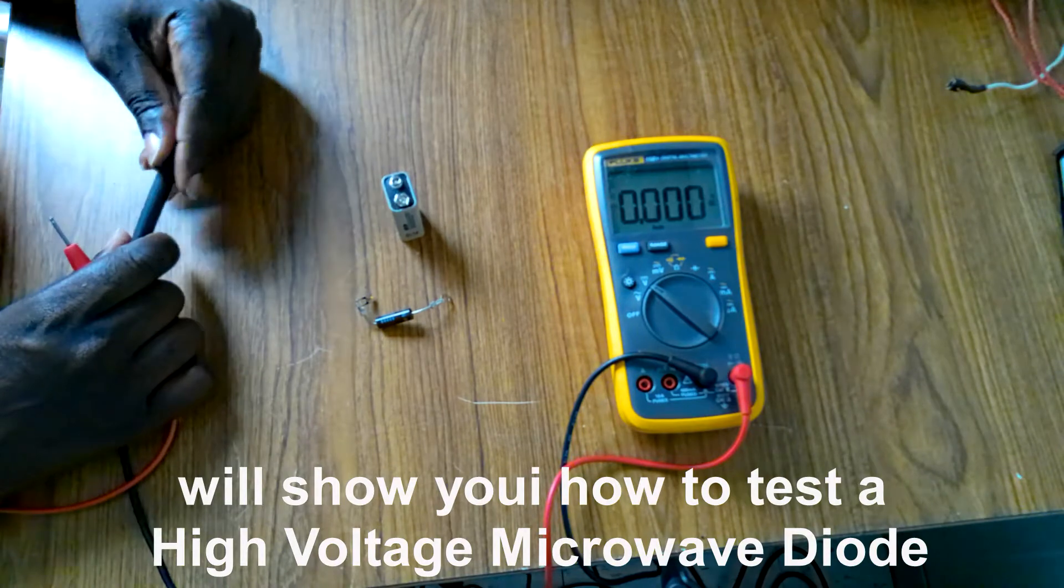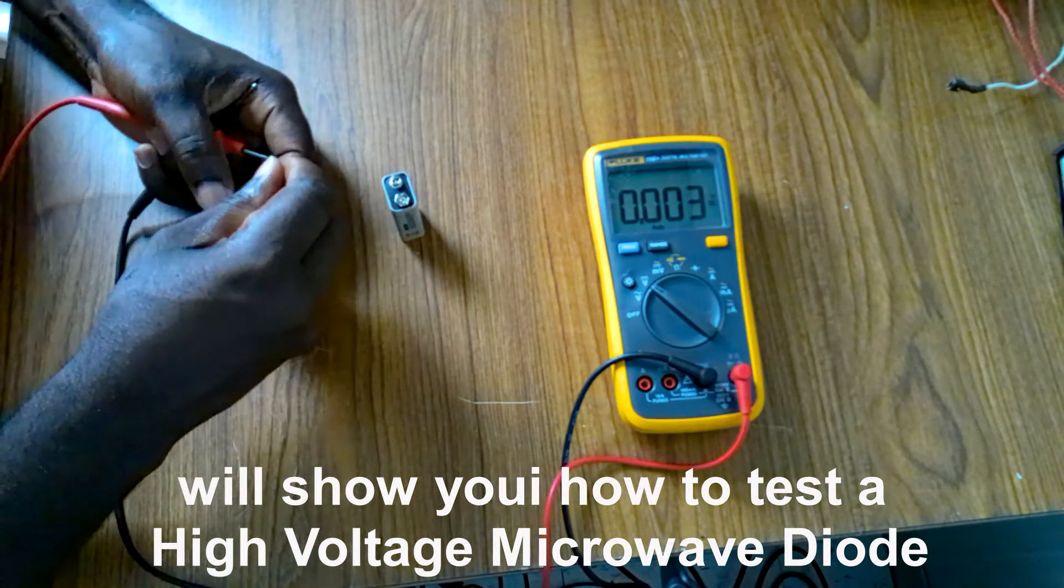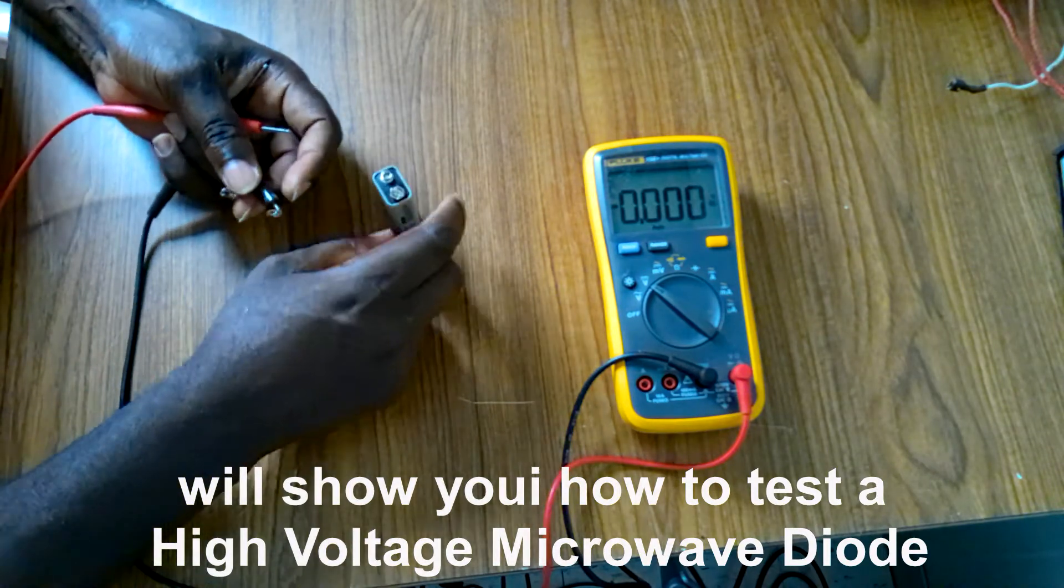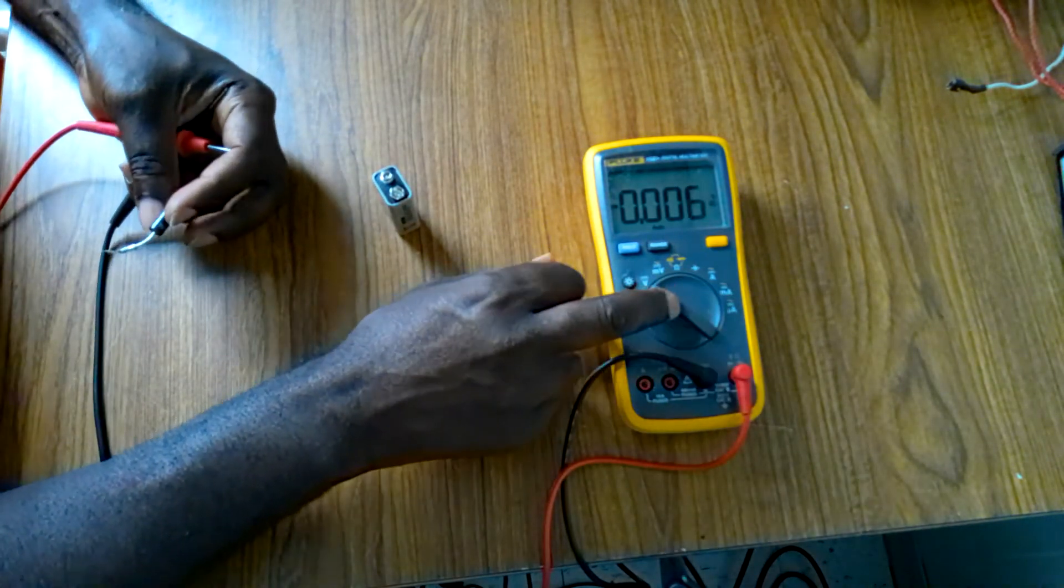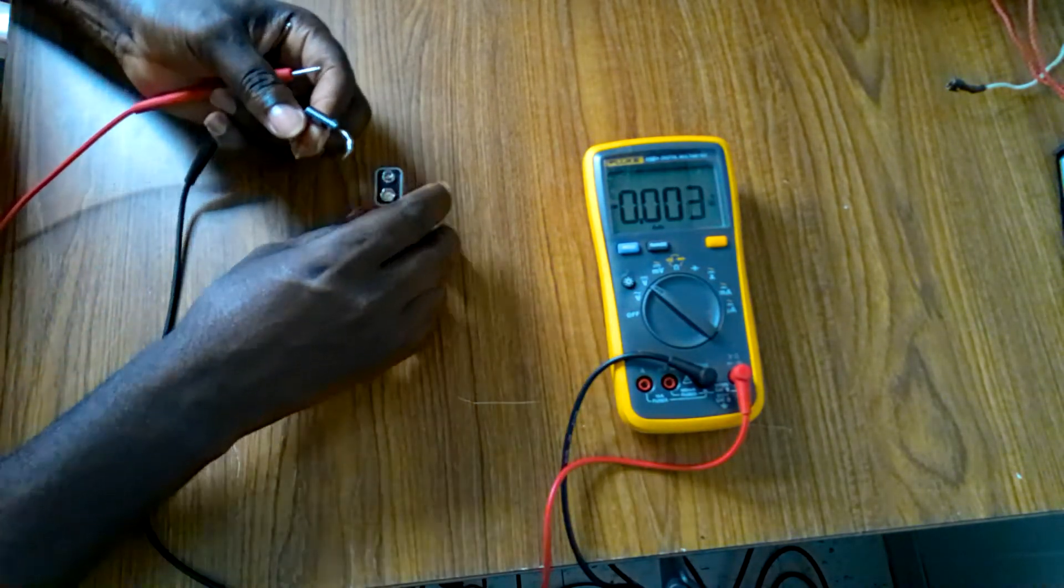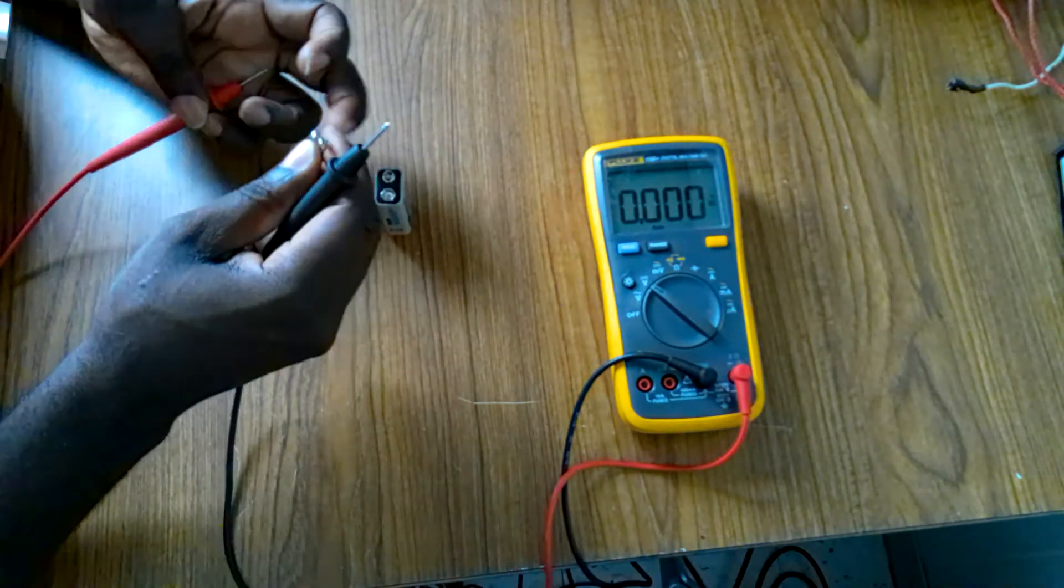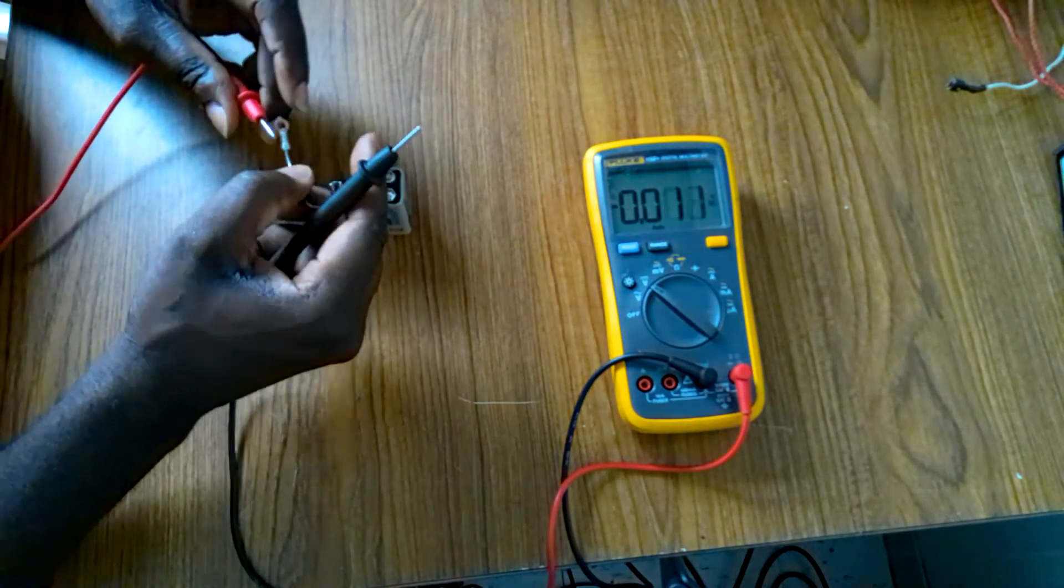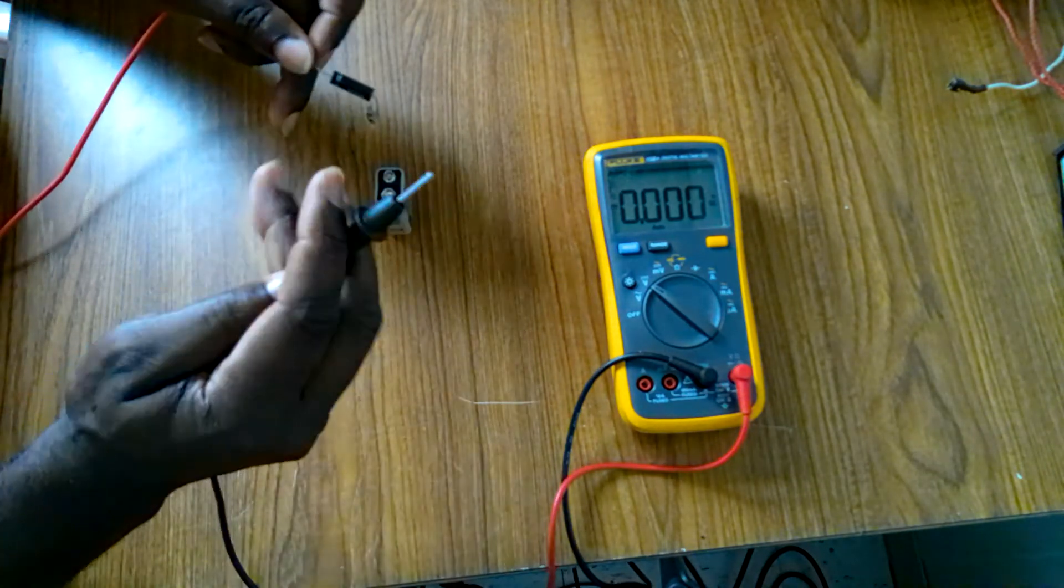Alright, I'm going to show you how to test a microwave diode with a 9V battery and a multimeter. You're going to set the multimeter to DC. You must get voltage in one direction but not the other.